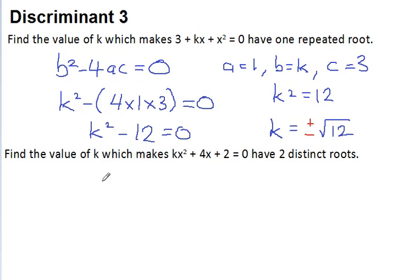So let's go on to question 2. And this says, find the value of k which makes kx squared plus 4x plus 2 equals 0 have two distinct roots.